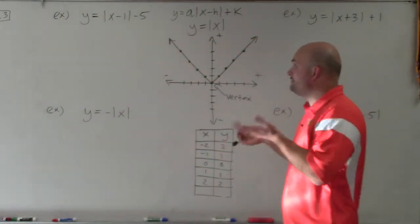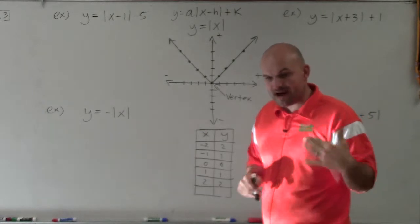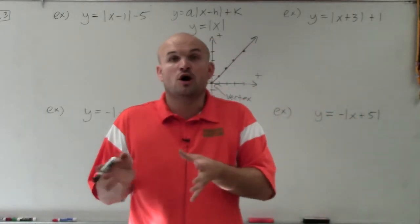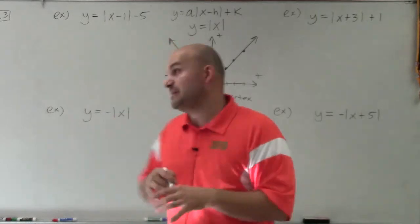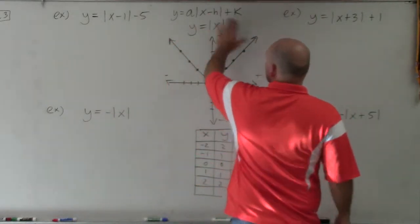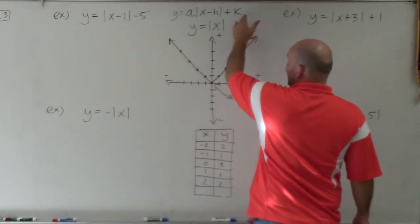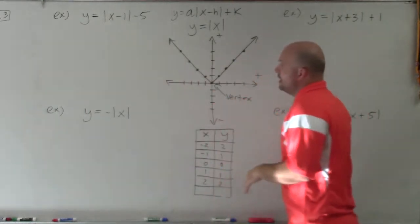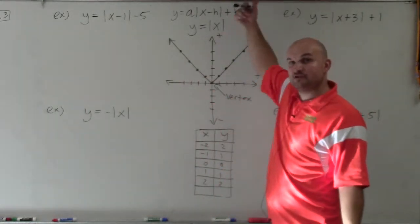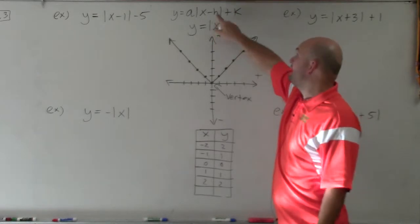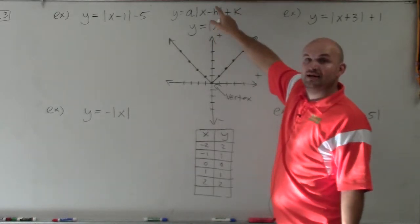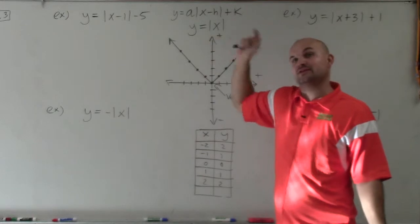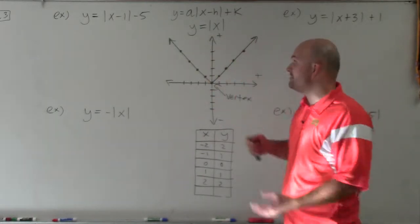For right now, all we have to do is identify some transformations. Hopefully you watched my first video where I talked about the difference between horizontal and vertical transformations. Remember, h is going to be shifting your graph left or right, and k shifts your graph up or down. When k is positive, the graph goes up; when k is negative, it goes down. When you have x minus 3, that shifts right; when you have x plus 3, that shifts three units to the left.